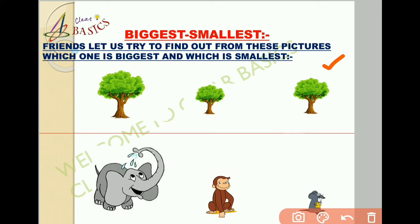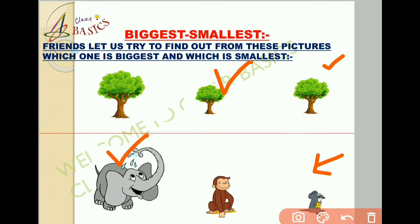Now look at the three trees in the picture. Can you tell me which one is smallest among the three trees? Yes, your answer is absolutely correct — the middle one is smallest among the three trees. Similarly, biggest is the opposite of smallest. Biggest means the object is big in size among the other objects. We use the word 'biggest' when there is a comparison among more than two objects. Can you tell me which one is the biggest among the three animals? Yes, the elephant is the biggest animal among the three.